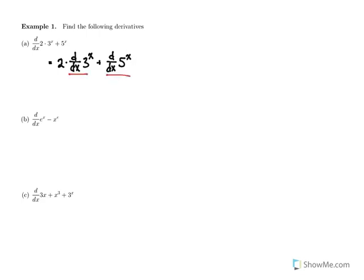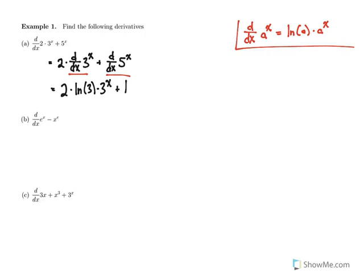Both of these are going to use our rule that the derivative of a^x is a^x times natural log of a, or we usually write the natural log of a first. So this whole thing is going to be equal to 2 times the natural log of 3 times 3^x plus the natural log of 5 times 5^x.